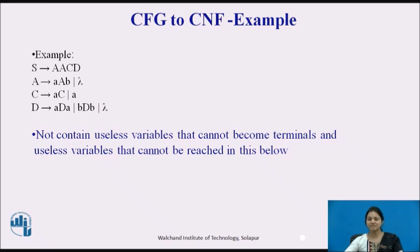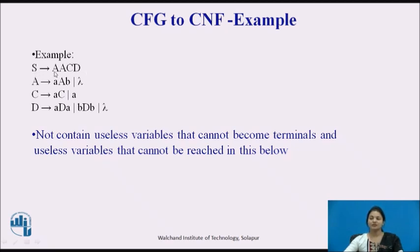In the first step we check whether any useless production is present. Here S, A, C, and D all have terminal values, so there is no useless production lacking a terminal value. Next we check for useless variables that cannot be reached. S reaches every variable, so there is no unreachable useless variable. We move to the next step.